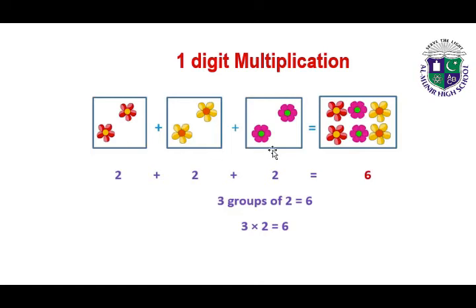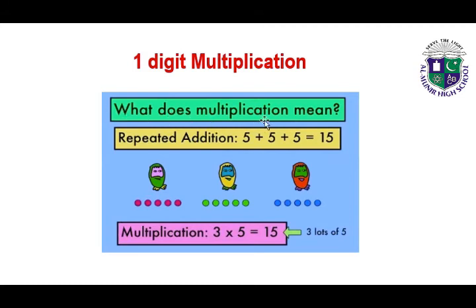Here we have three groups of two, and each group contains two flowers — two, two, and two. When we add all these twos from three groups we get the number six. So three groups of two is equal to six, and three multiply by two is equal to six.